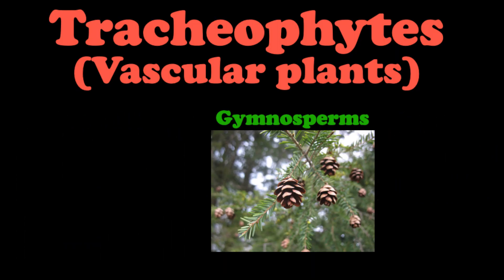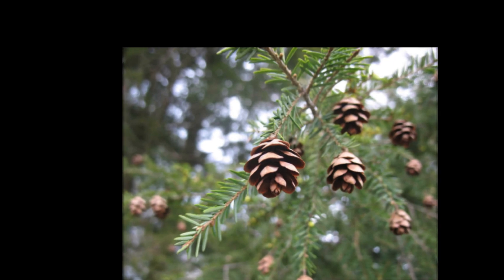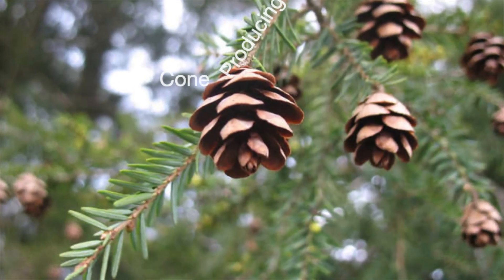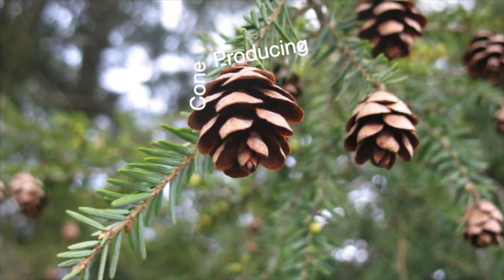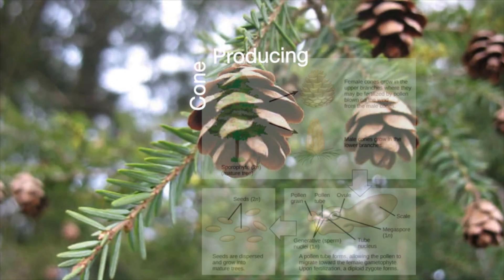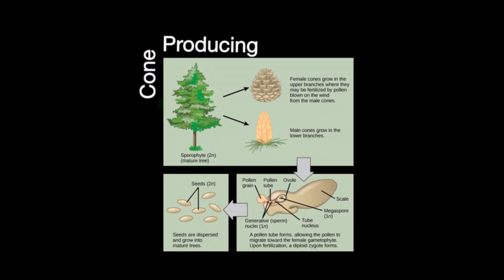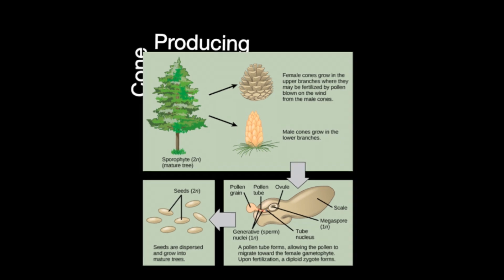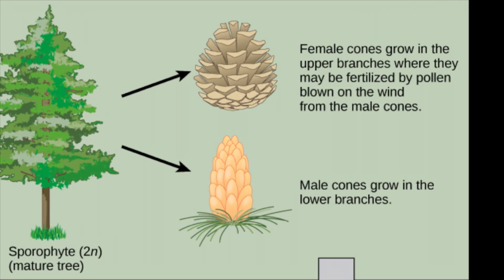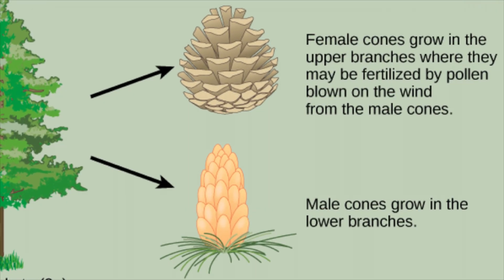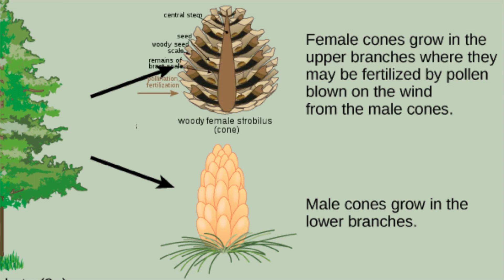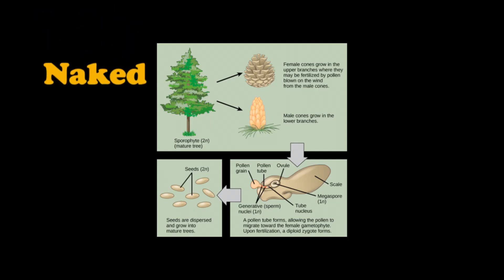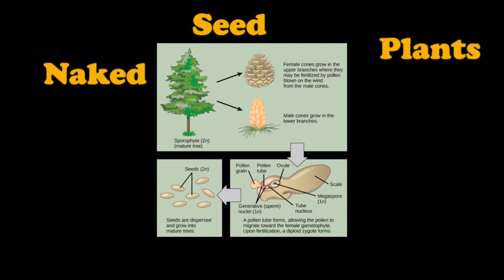Gymnosperms, or conifers, are the cone-producing plants. They lack the presence of ovaries and develop their seeds in woody reproductive organs known as cones. Because they don't have fruits for protection, the seeds are completely exposed, leading them to be sometimes referred to as naked seed plants.